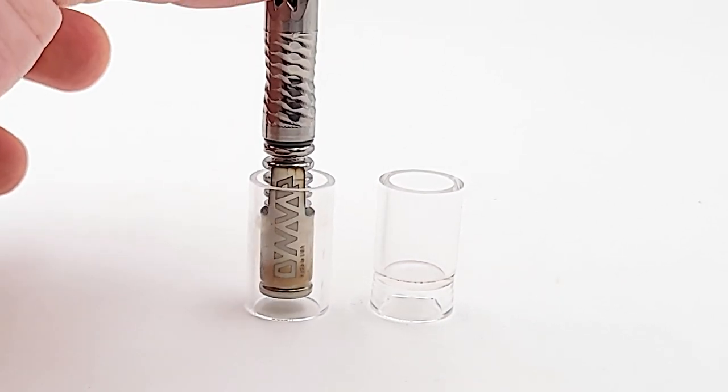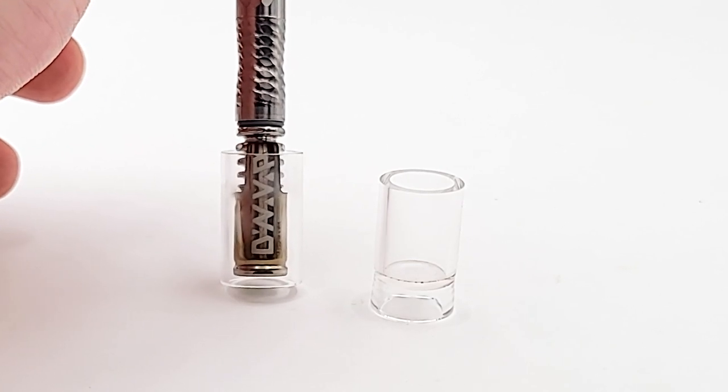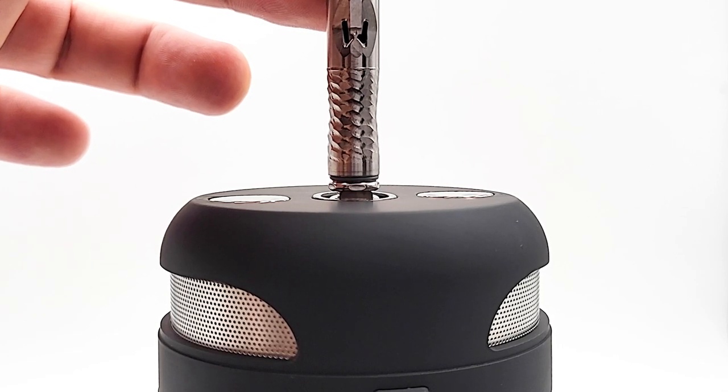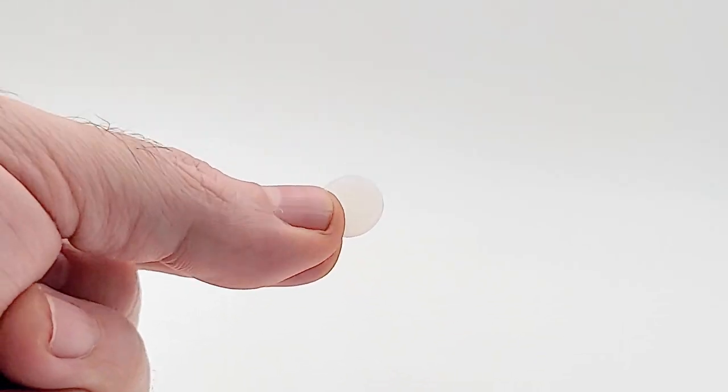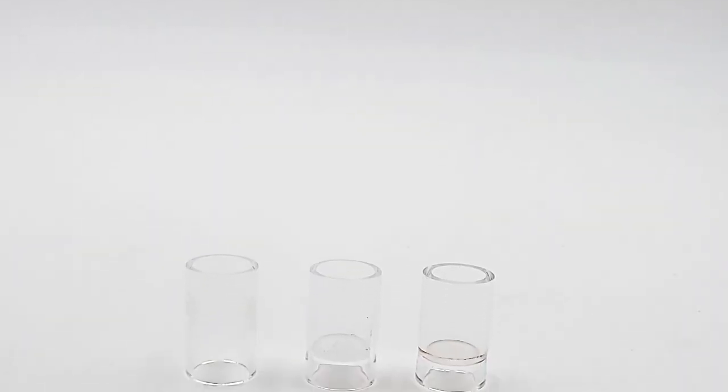This tube also allows you to insert the Dynavap deeper and will give you results comparable to heating the base of the cap. Heating the base will provide the biggest clouds and quickest extraction. Explore different combinations and find which one is right for you. It is recommended that once you find your perfect setting, you stick to that setting and swap the glass tubes the least possible to extend the life of your heater.